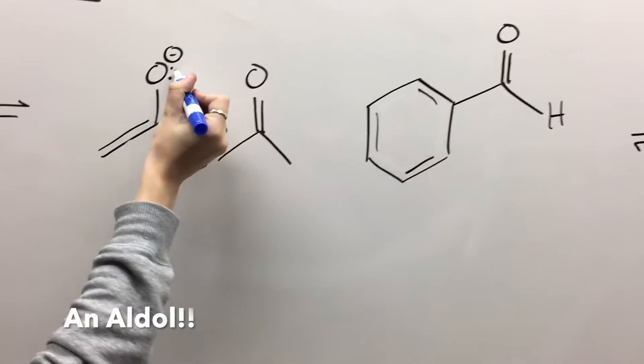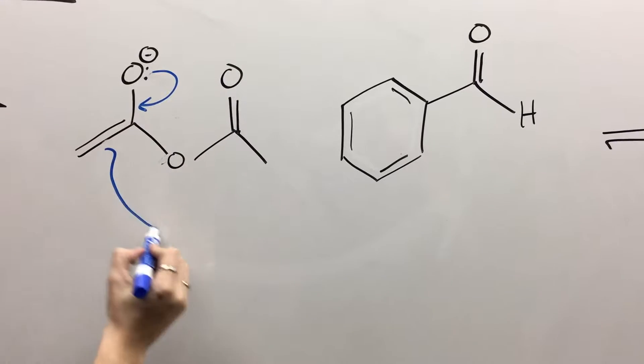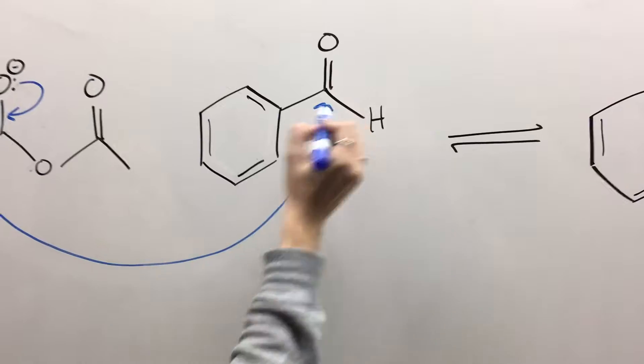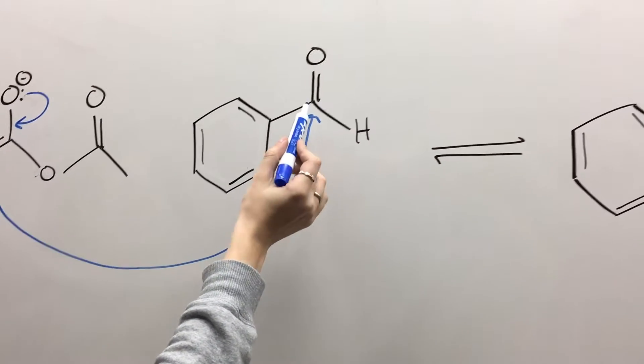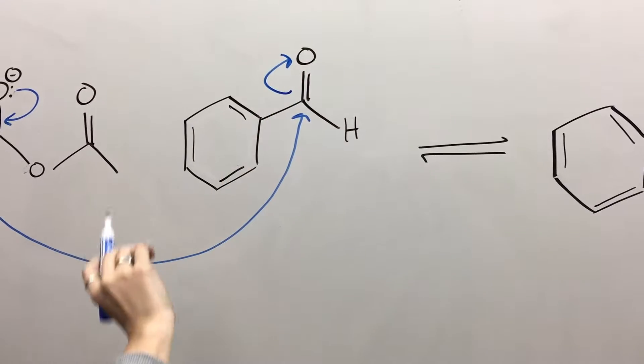which in the next step, this lone pair will swing down to reform this double bond, pushing the electrons from this double bond to form a bond with the carbonyl carbon, pushing these electrons up onto the oxygen.